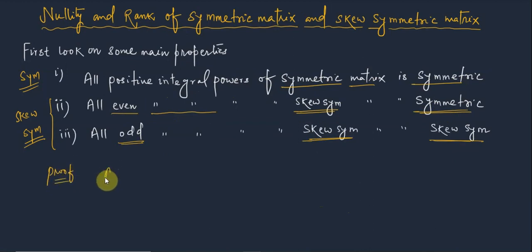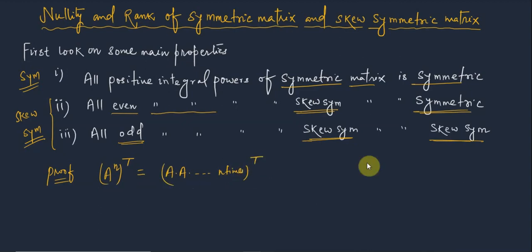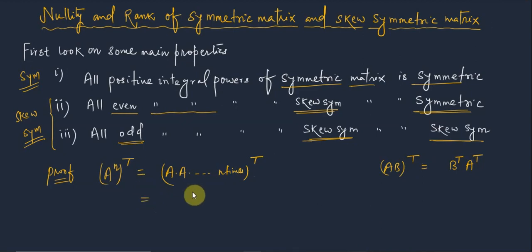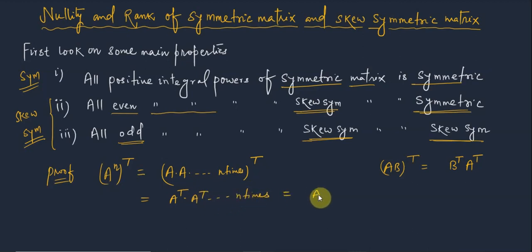How do we prove it? We know the transpose of the nth power of a matrix: (A^n)^T = (A·A·...·A)^T, taken n times. Using the property (AB)^T = B^T·A^T, and since all factors are the same matrix A, we get (A^n)^T = (A^T)·(A^T)·...·(A^T) = (A^T)^n. So very simply, (A^n)^T = (A^T)^n.